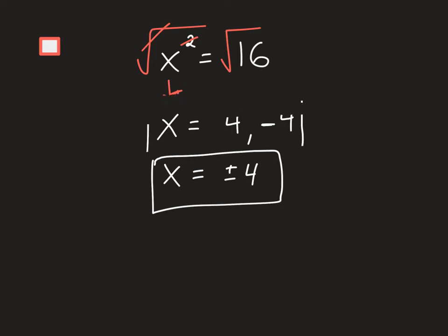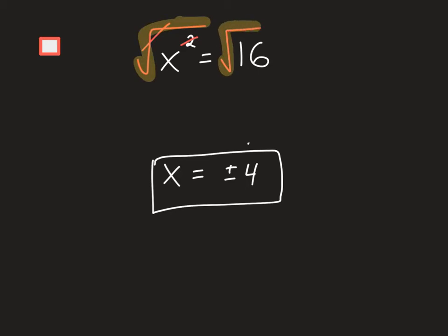To move quicker through these problems: whenever we take the square root of both sides, we always want to make sure we write plus or minus on the next step. Let me highlight that — whenever you take the square root of both sides, make sure you write plus or minus on the next step.